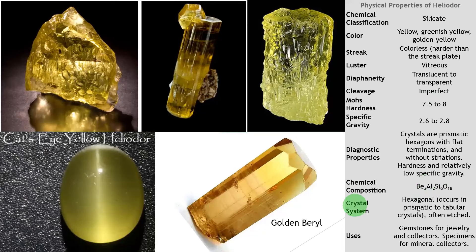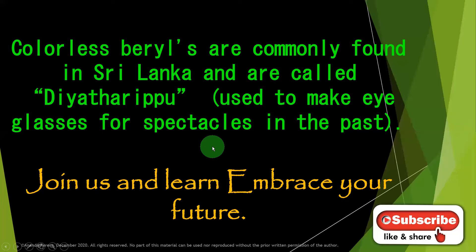Crystal system is hexagonal. Occurs in prismatic to tabular crystals, often etched. Uses: gemstone for jewelry and for collectors. Specimens for mineral collectors. It is golden beryl — heliodor.